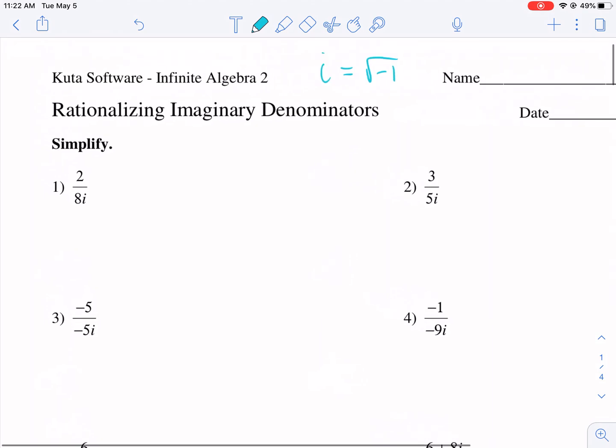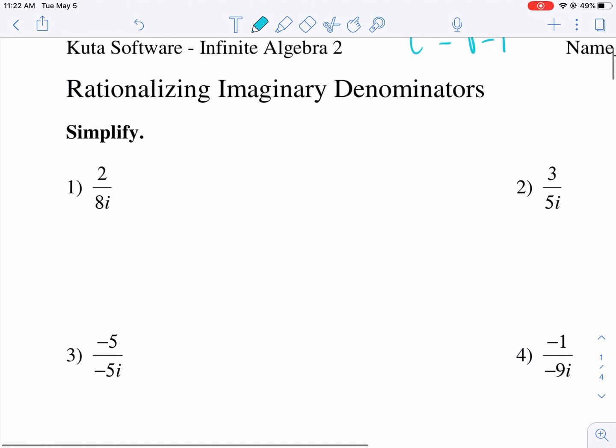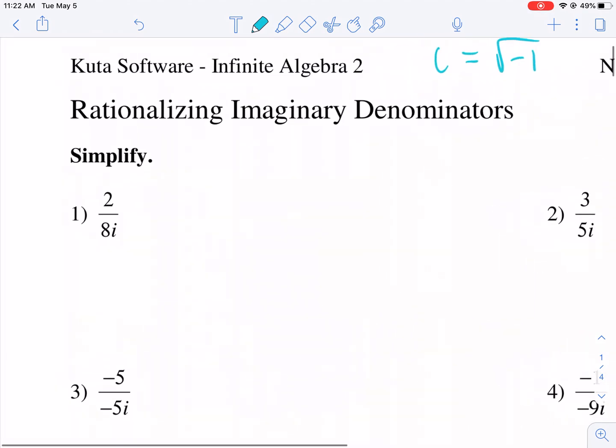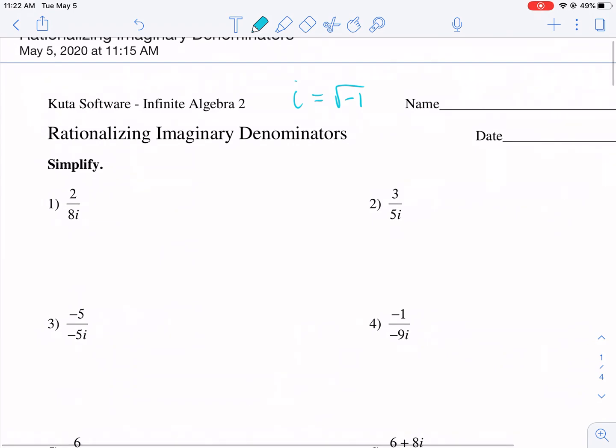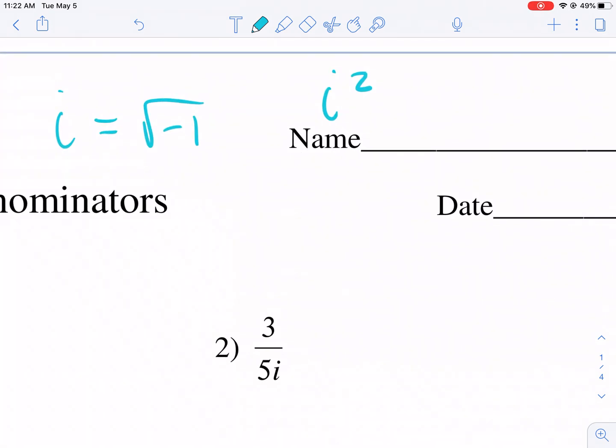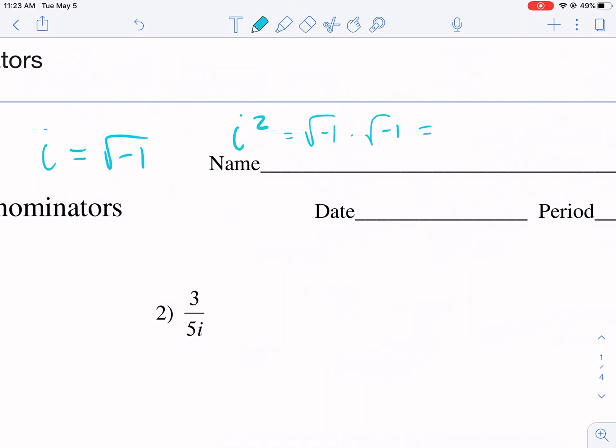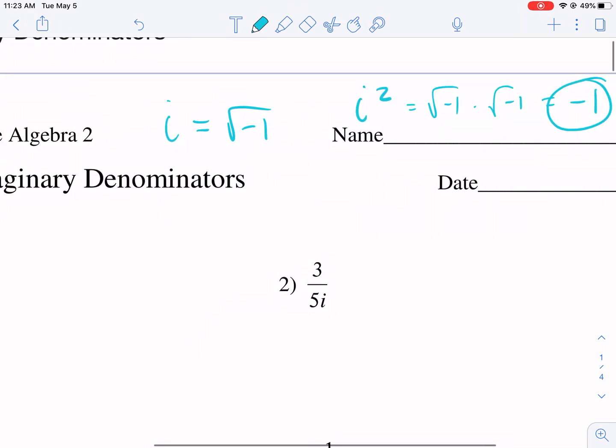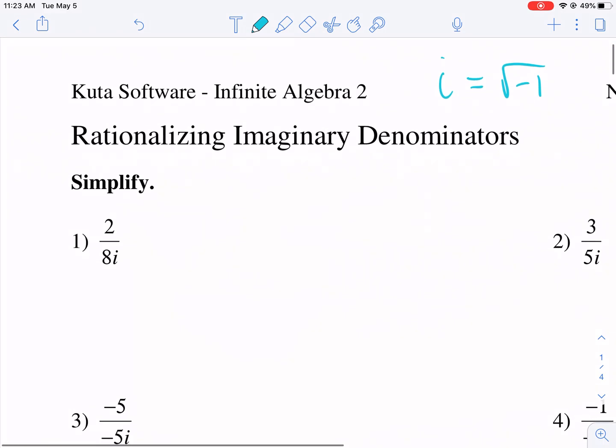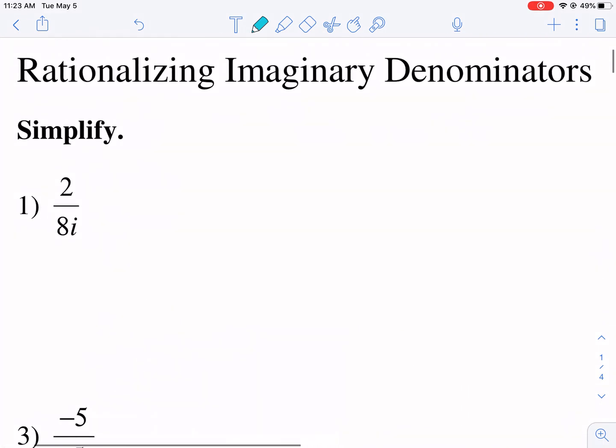Now when we're dividing, it's very difficult to divide by an imaginary number, so what we need to do is we need to rationalize it. The whole premise in rationalizing it is using i squared. So we know that i squared is the same thing as the square root of negative 1 times the square root of negative 1. As we multiply two square roots times each other, we get the radicand underneath, which is negative 1. So i squared being equal to negative 1 is going to help us rationalize these denominators.